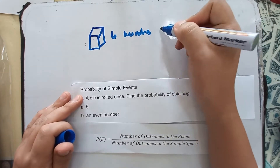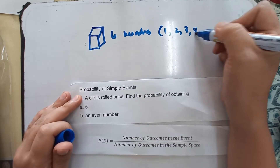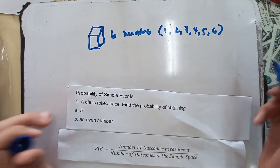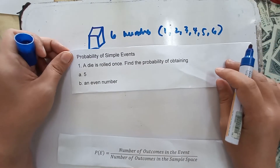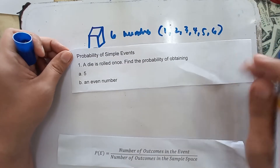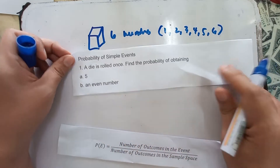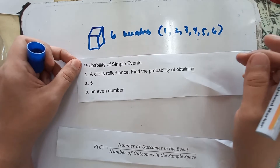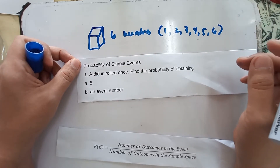These numbers are one, two, three, four, five, and six. These are the six numbers in a die, and you are asked to find the probability of obtaining an even number. What is an even number? It is those numbers that are divisible by two.